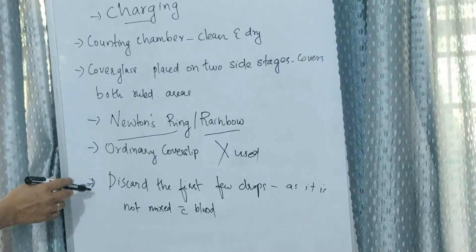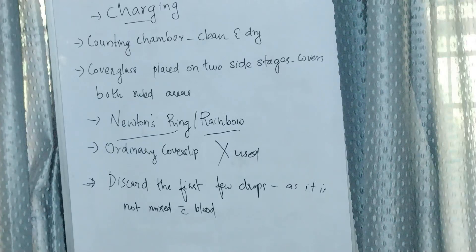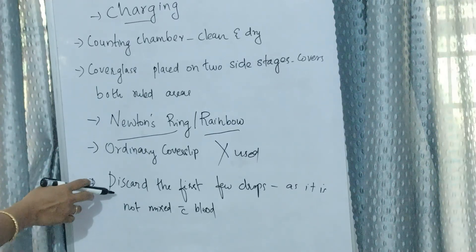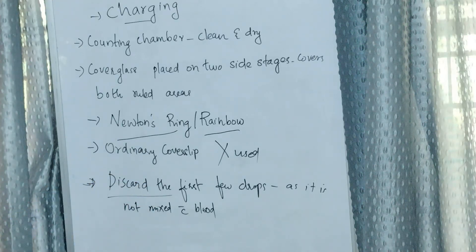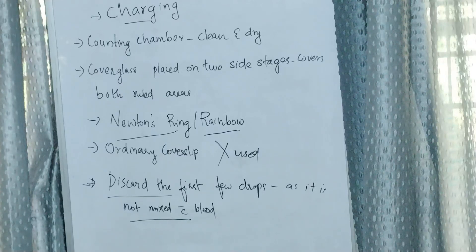The process of introducing diluted blood into the counting chamber is called charging. If using pipette dilution or micro dilution, discard the first few drops as the fluid present in the stem of the pipette is unmixed with blood.